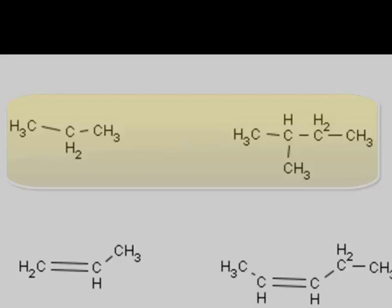Alkanes can be straight chains as shown here, these two compounds, or they could be branched. We'll see some examples of branched alkanes in subsequent videos.